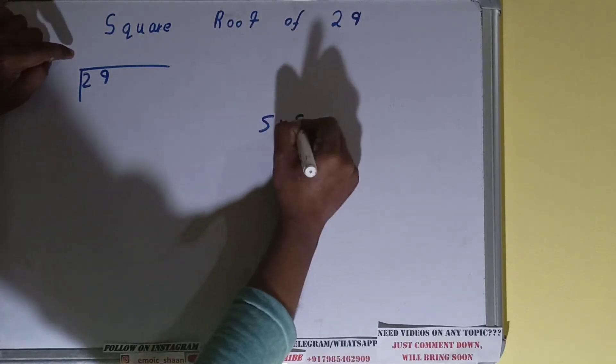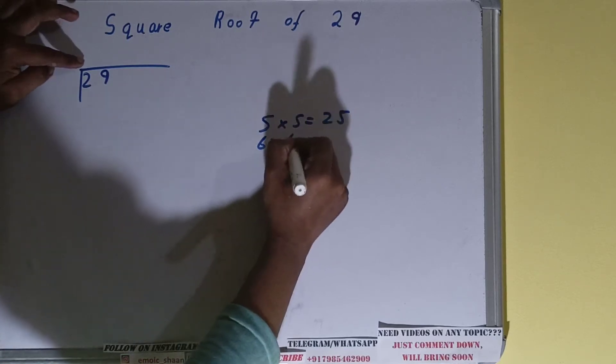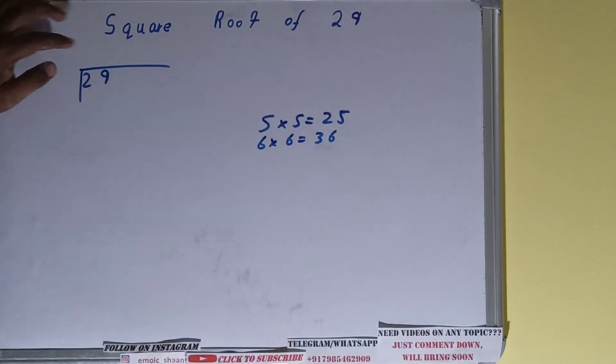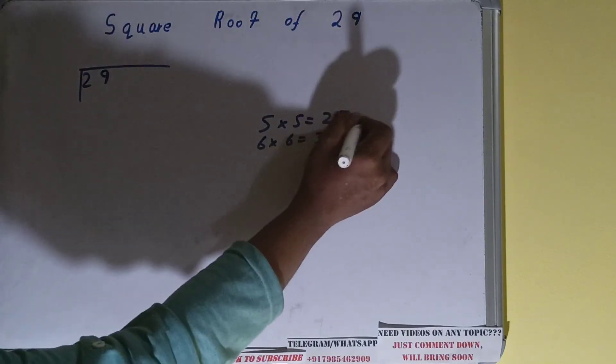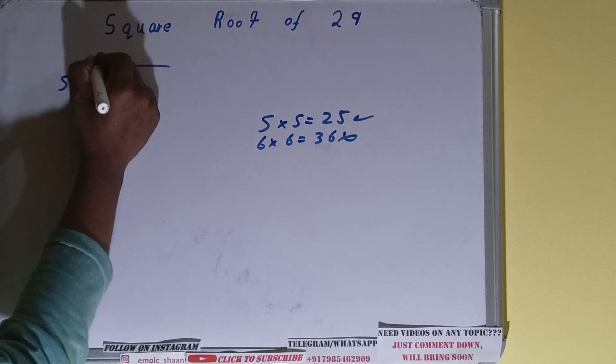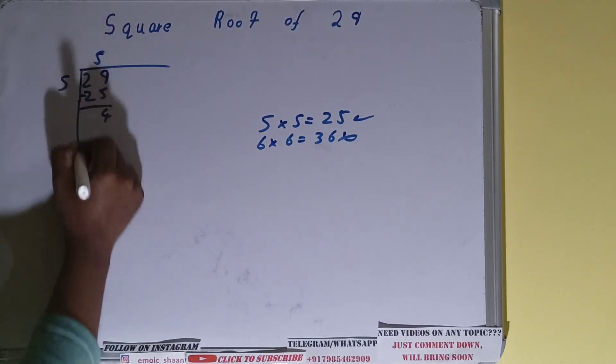If we take 6 here, we have to take 6 here also, which will give the value as 36. We cannot take 36 because it is greater than 29, so we have to take this one. So 5 times 5 is 25, we'll be left with 4.